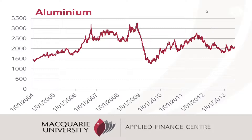Here you'll notice in this chart of aluminium prices that some commodities have a feature that we call mean reversion. In this period from 2004 to 2013, the price of aluminium has basically stayed within a range between about $1,200 and $3,300. We call this a mean reversion characteristic and we have special models that are suitable for capturing this phenomenon.